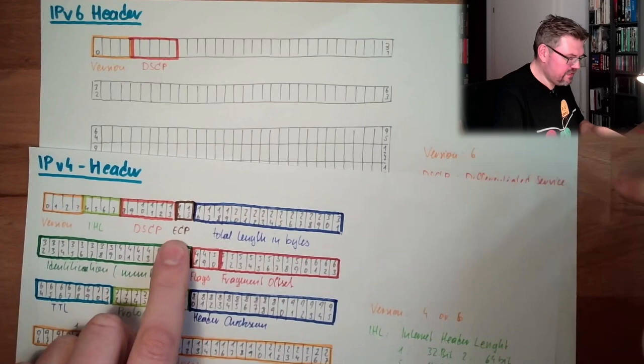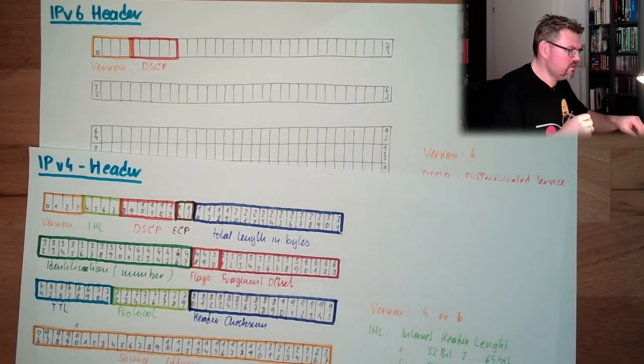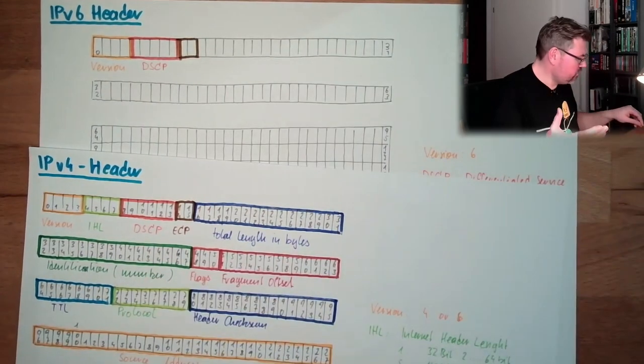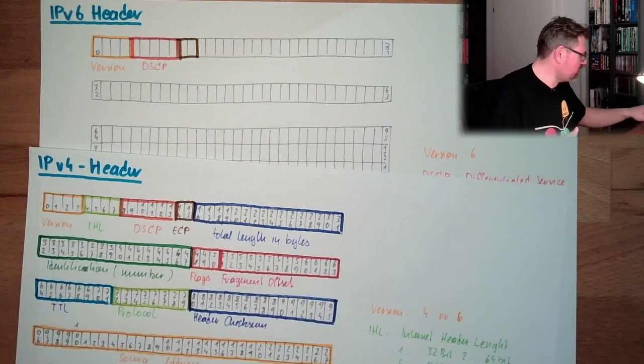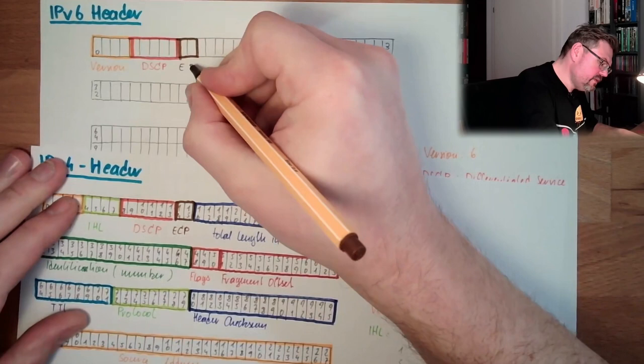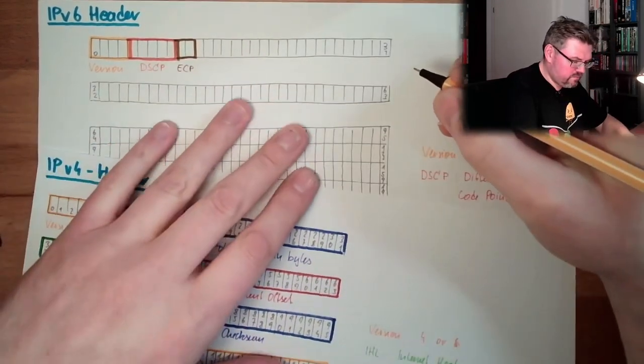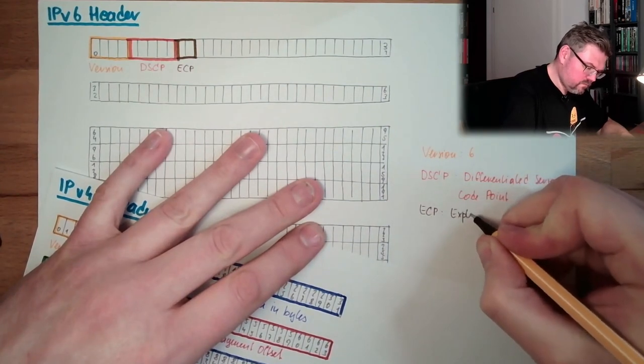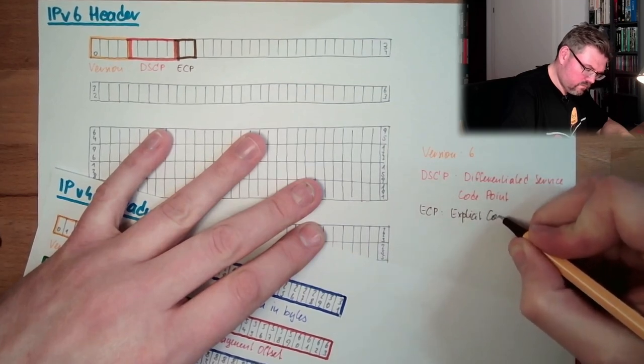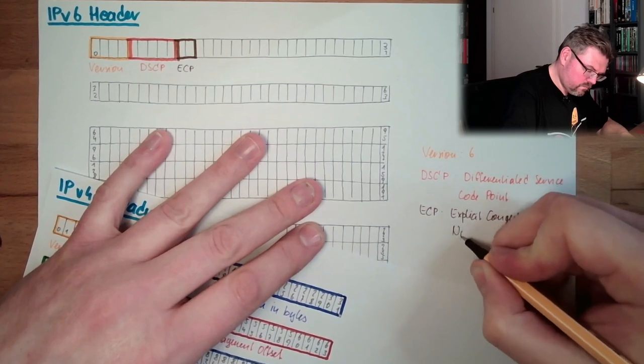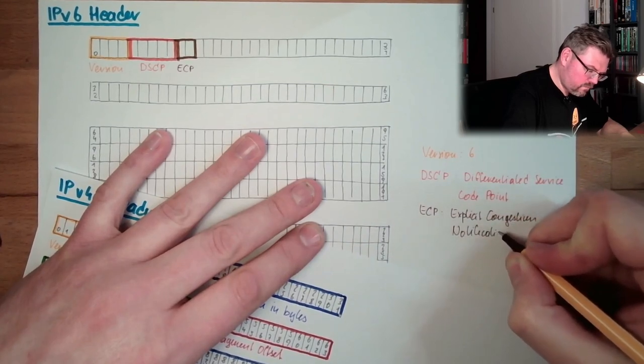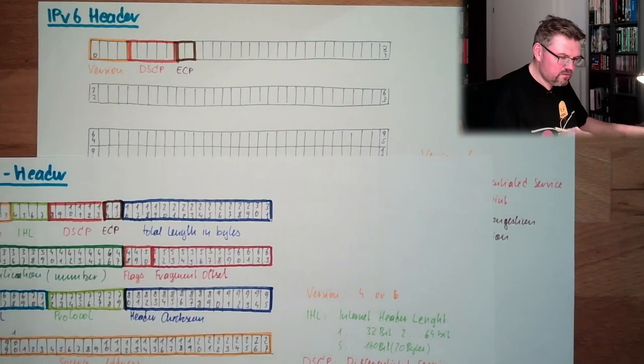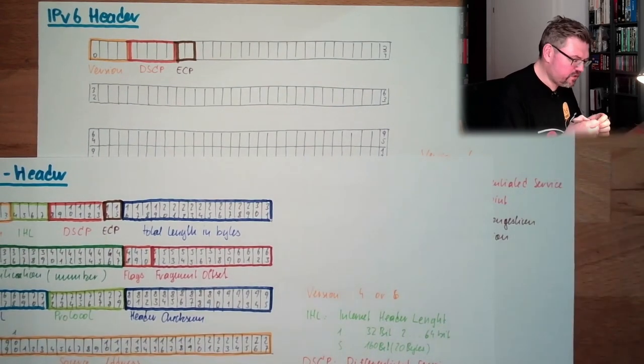And then the next one was this ECN, the congestion notification. This is also here, two bits wide, so it looks pretty much the same, ECN, Explicit congestion notification. It has the same meaning as in protocol version 4, so please don't send me, I'm congested, that congestion is already ongoing.